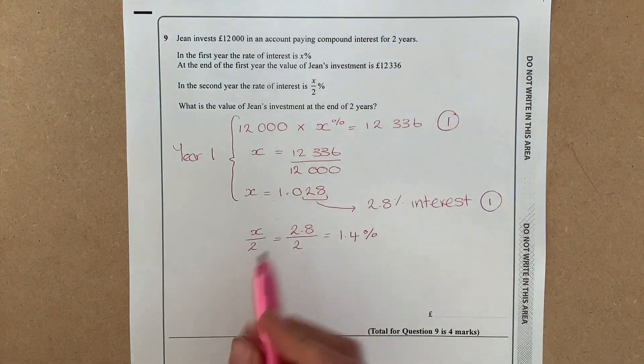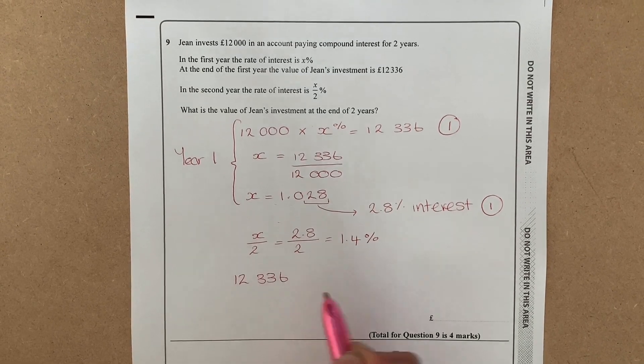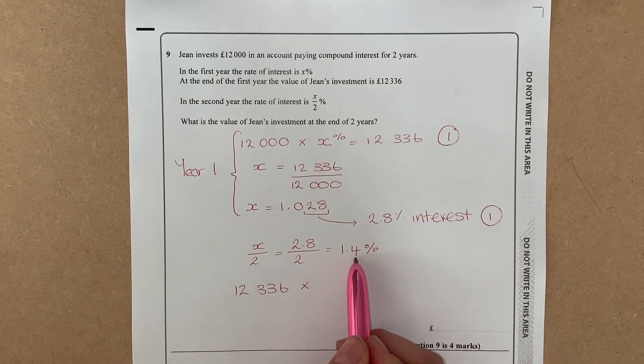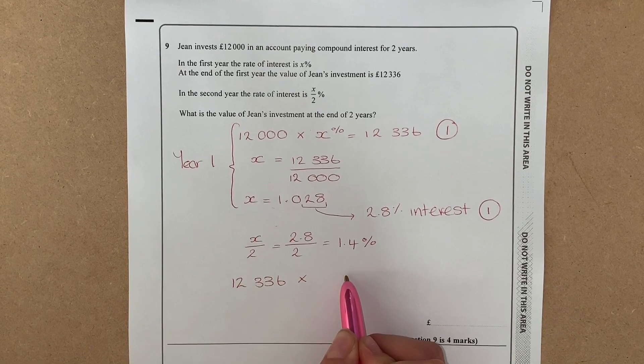So moving on to year two: at the end of year one we had £12,336, and we want to multiply that and make it bigger by 1.4 percent. Again, a common mistake here would just be to write 1.4 percent, but we need to turn that into a multiplier.